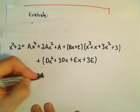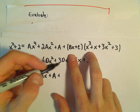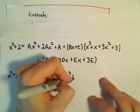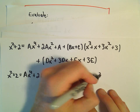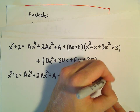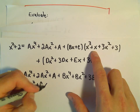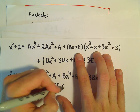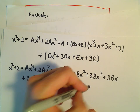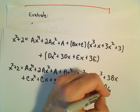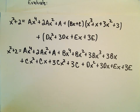Continuing to expand: Bx times x cubed gives Bx to the fourth; Bx times x gives Bx squared; Bx times 3x squared gives 3Bx cubed; Bx times 3 gives 3Bx. Distributing C: Cx squared plus Cx plus 3Cx squared plus 3C. And then plus Dx squared plus 3Dx plus Ex plus 3E.